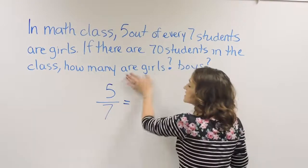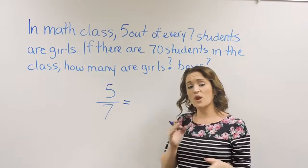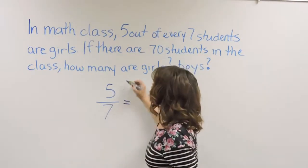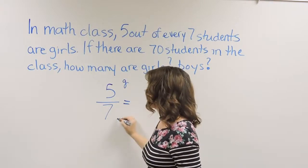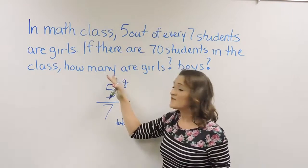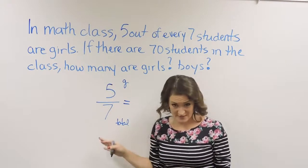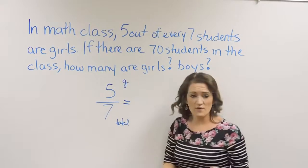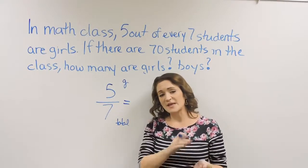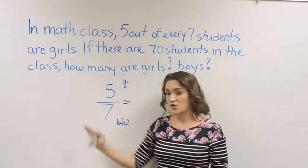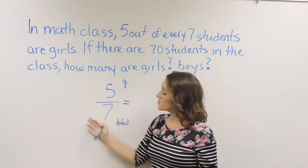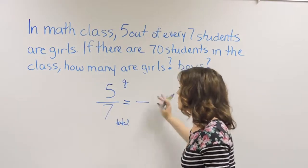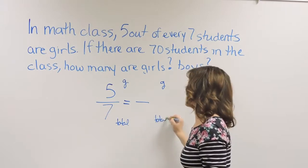We're going to set this equal to the ratio that we're solving for. Remember that this 5 stands for how many girls we have and the 7 is the total. We have 5 girls out of a total of 7 students. This is important because when we're writing the ratio that we're solving for, we need to make sure it's set up exactly the same way. If our original ratio on the left is girls to total, the ratio on the right also has to be girls to total.